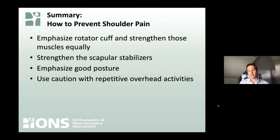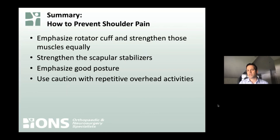To prevent shoulder pain: you really want to hone in on each of the rotator cuff muscle groups and balance them out, work on the deltoid, and strengthen the scapular stabilizers. That's going to be one of the keys to preventing shoulder pain — not just strong rotator cuff muscles and deltoid, but also strong shoulder blade muscles. Work on good posture, and anytime you're involved with repetitive overhead activities, use caution — whether you haven't done it in a while or you're doing things like painting with your arms up for an extended period, that can irritate the shoulder.